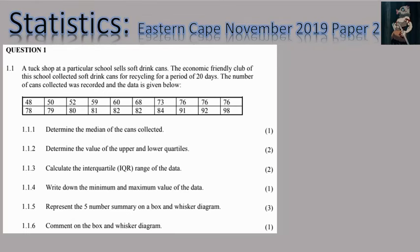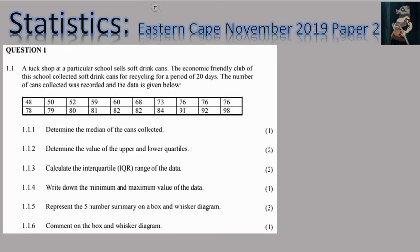We are going to start with stats, because that's how question papers start — they start with stats. The question says: a tuck shop at a particular school sells soft drink cans. The eco-friendly club of the school collected soft drink cans for recycling for a period of 20 days. The number of cans collected was recorded and the data was given below.